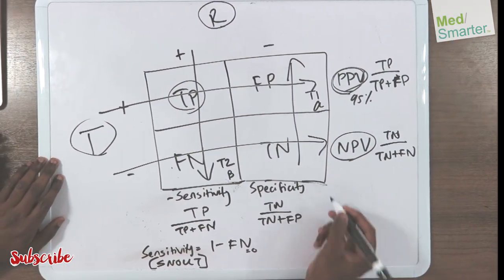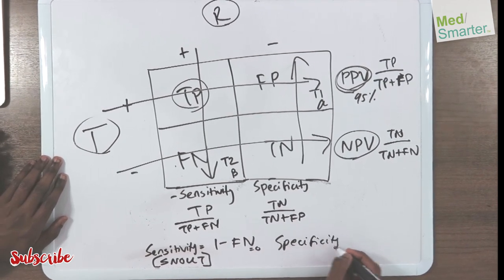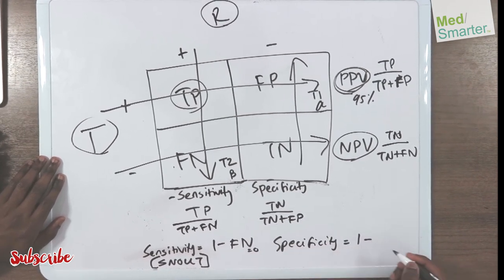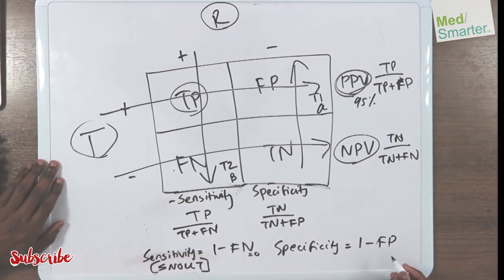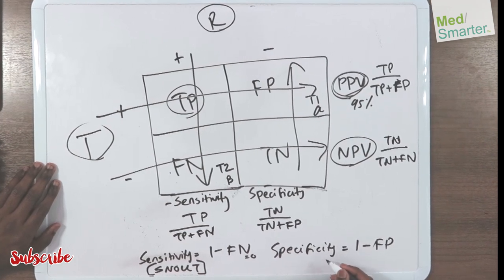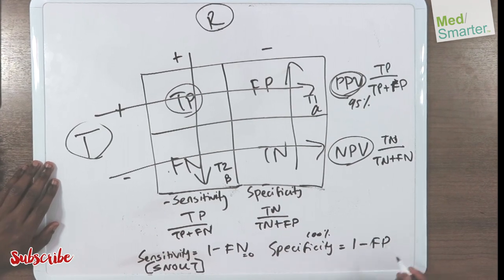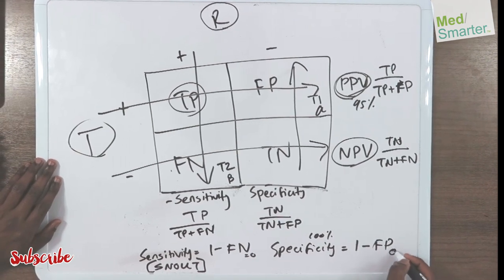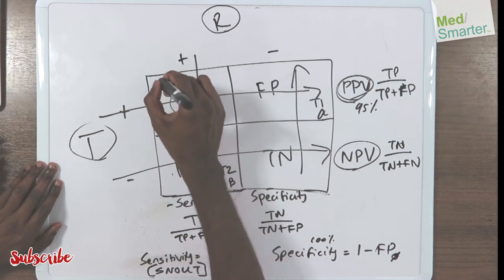As far as specificity is concerned, specificity equals one minus your false positive. As your specificity approaches 100%, your false positive must be zero. And if your false positive is zero, it means it's 100% true positive.